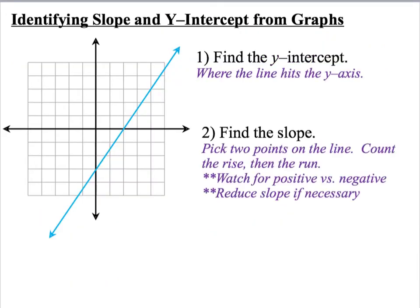Now let's talk about identifying slope and y intercept from a graph. The first step is finding the y intercept. We know this is going to be where our line intersects the y axis. So that for us is going to be this point right here. So our y intercept is at 0, negative 3.